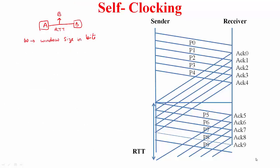Let us look at sliding window at the link layer. You are employing sliding window only between two nodes A and B, and the link interconnecting them has a bandwidth B (the link rate) and a round trip time RTT. W is the window size in bits. What would you like W to be? You want W to be the bandwidth-delay product to achieve maximum throughput.